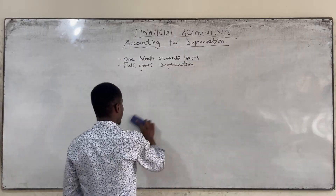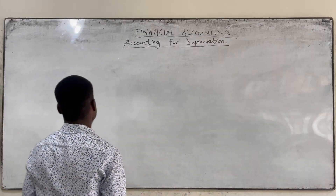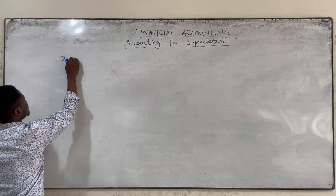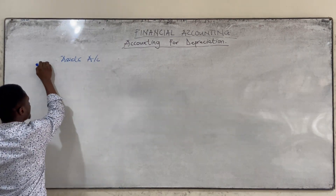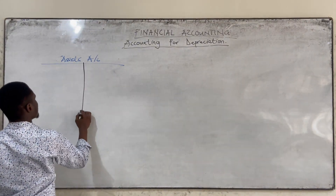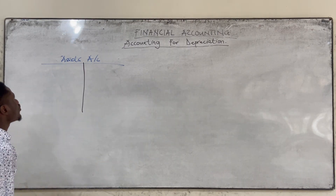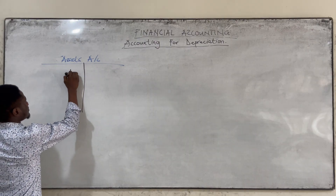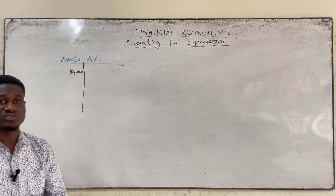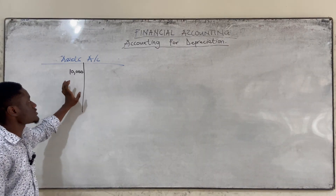We move on to the accounts involved. We have the asset account — it can be motor vehicle, plant and machinery, or any asset given to you. Any item or asset that you buy, you will debit it. So if we bought assets for 10,000, we are going to debit that 10,000 in the asset account. When our assets are increasing, we debit. So we bought the assets and our assets are now increasing, so that 10,000 will be debited in the asset account.